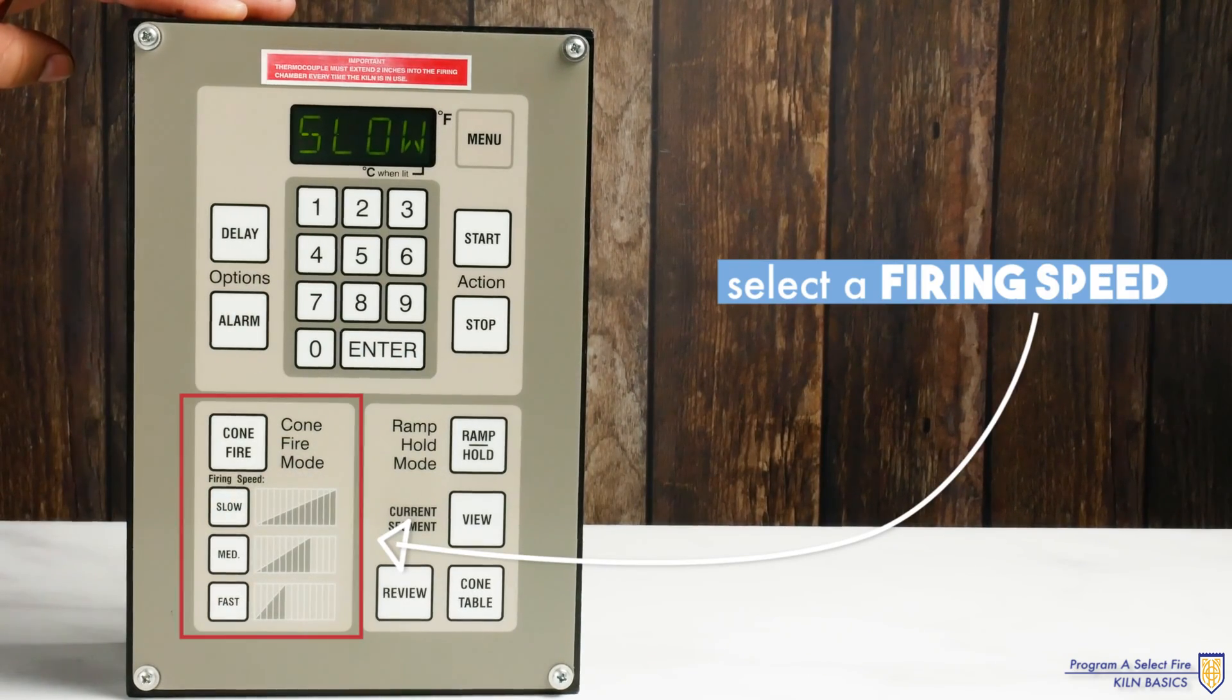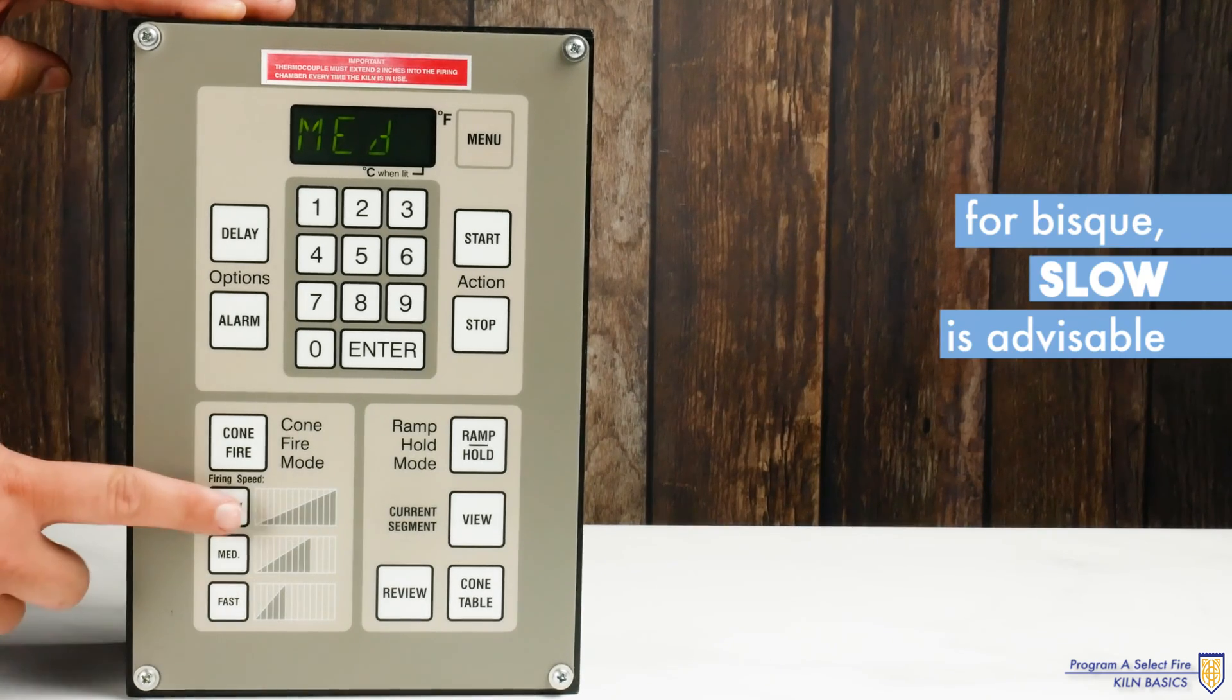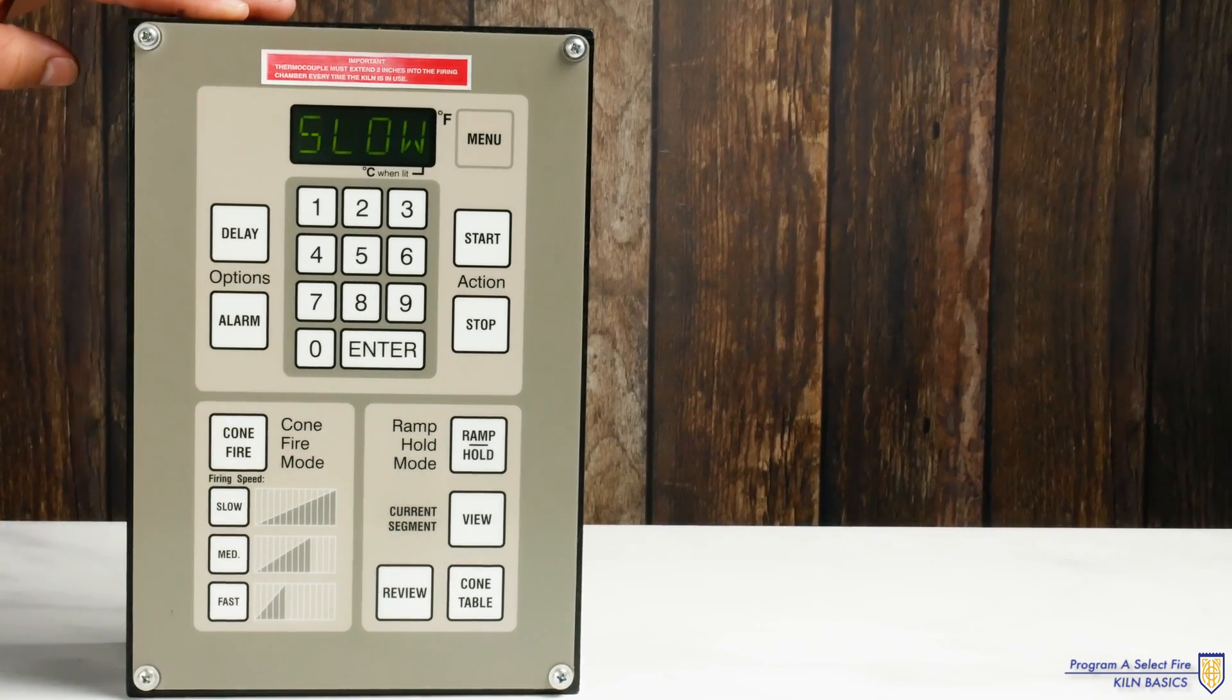It will now prompt you to select a firing speed. You can choose between fast, medium, and slow. For bisque slow is always advisable. Hit enter.